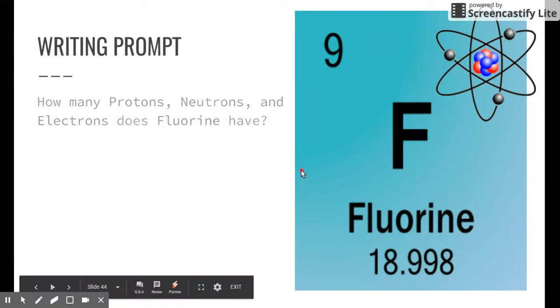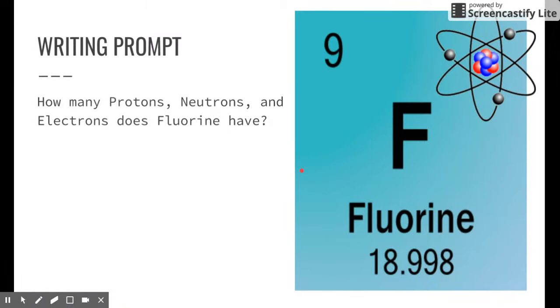Let's start with a writing prompt. I'm going to ask you a question: how many protons, neutrons, and electrons does fluorine have? Please take a moment to pause the video and try to answer this question yourself. To answer this question, let's start with the number of protons. This number right here is called the atomic number. It represents the identity of the atom or fluorine, which also is coincidentally, or non-coincidentally, the number of protons.